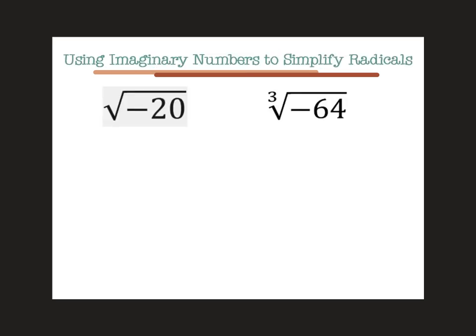So here are a few examples of using imaginary numbers to simplify radicals. Previously, if we tried to take the square root of negative 20, we would have said it's not a real number. But now that we know about imaginary numbers, we can simplify this.